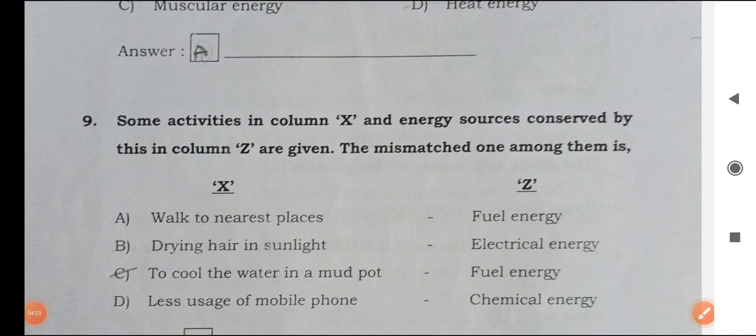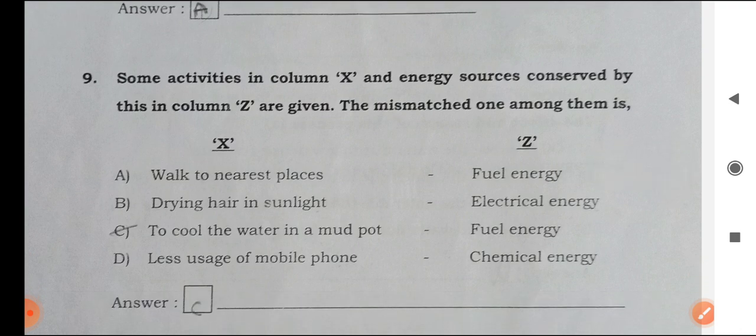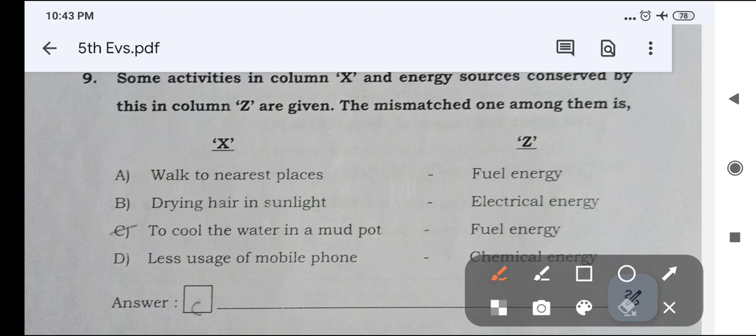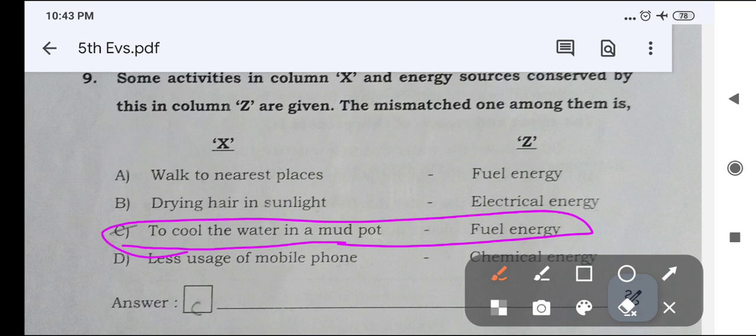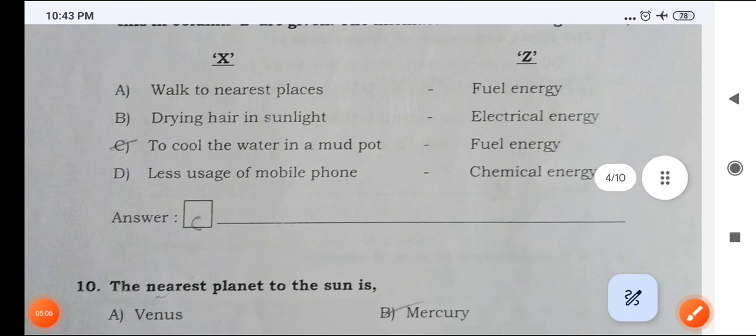Some activities in column X and energy sources conserved by this in column Z are given. The mismatched one among them is, to cool the water in a mud pot, fuel energy is wrong, mismatched. Walk to nearest place, fuel energy. Drying hair in sunlight, electrical energy. Less usage of mobile phones, chemical energy. But to cool the water in a mud pot, we can't save fuel energy. So this is mismatched.